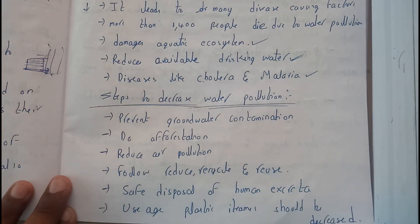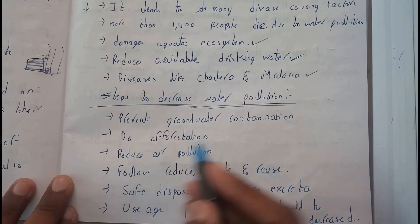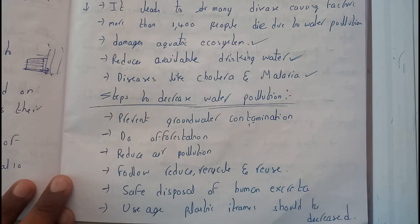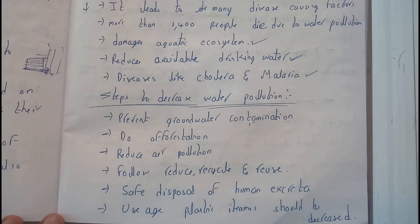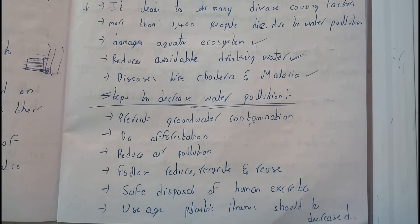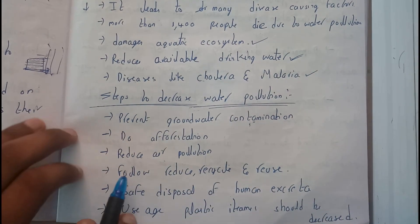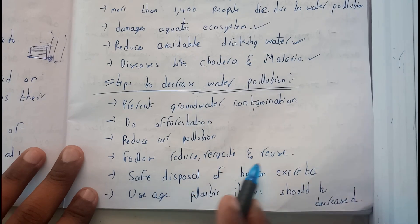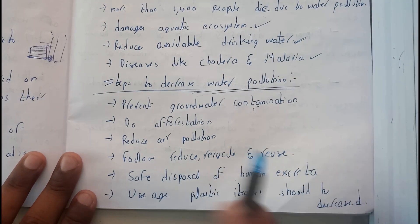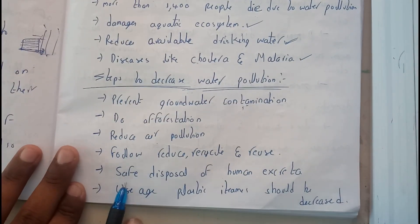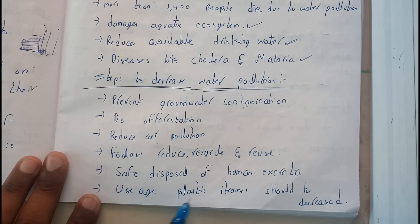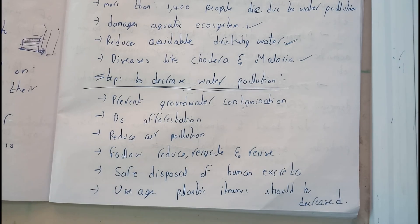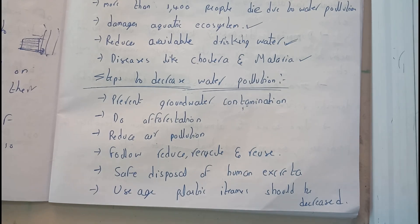Steps to decrease water pollution: first, prevent groundwater contamination, which indirectly leads to decreased usage of fertilizers and pesticides. Do afforestation. Reducing air pollution also helps, as air pollution is a factor in water pollution. Follow the 3Rs — reduce, reuse, recycle. Safely dispose of human excreta, and decrease usage of plastic items.